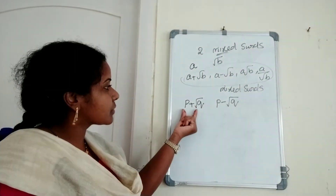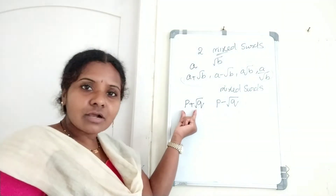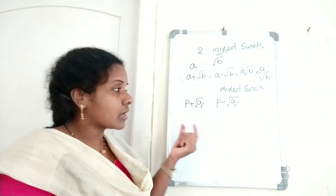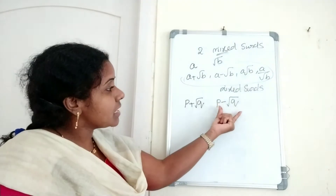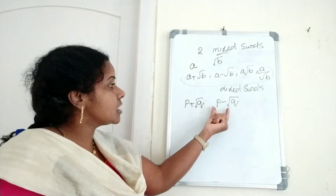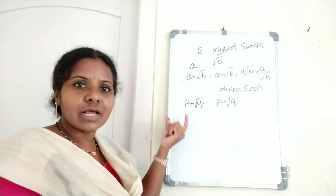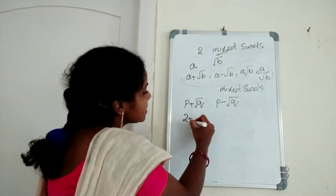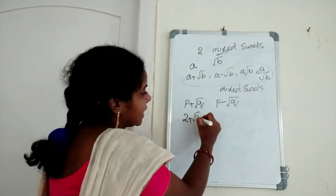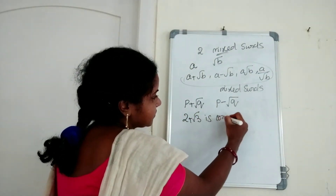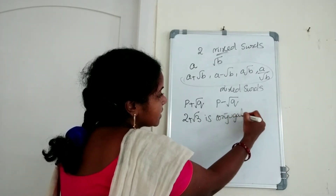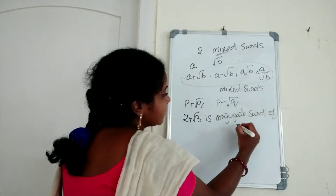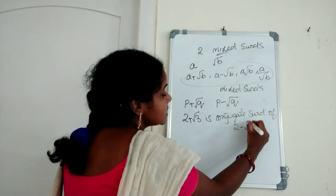Then these surds are said to be conjugate to each other. That means P plus root Q is conjugate to P minus root Q, and P minus root Q is conjugate to P plus root Q. For example, 2 plus root 3 is conjugate to 2 minus root 3.